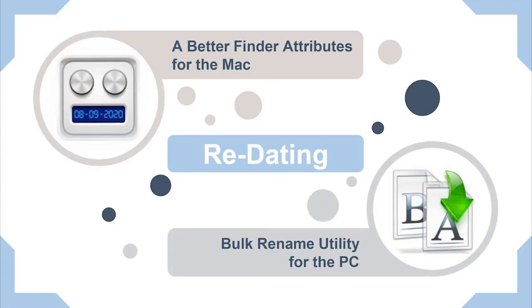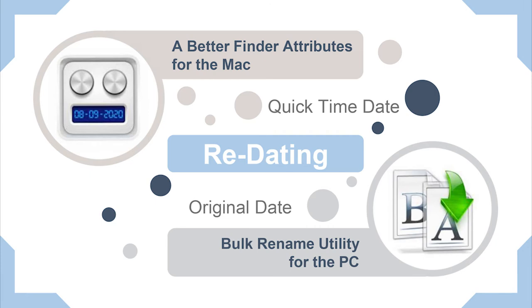There are tools that can show you these hidden dates and let you change the creation date accordingly. For the Mac we have A Better Find Attributes. For the PC, I've yet to find one as powerful, but Bulk Rename Utility does have some date-changing capability. With A Better Find Attributes, you simply drag and drop your files into the tool, and it will look in the background for a QuickTime date or original date as options. You can also just tell it a date and it will change it for you. The other option is to go down the rabbit hole of EXIF tools — but that's way beyond this video, so I'll leave you to Google that one.